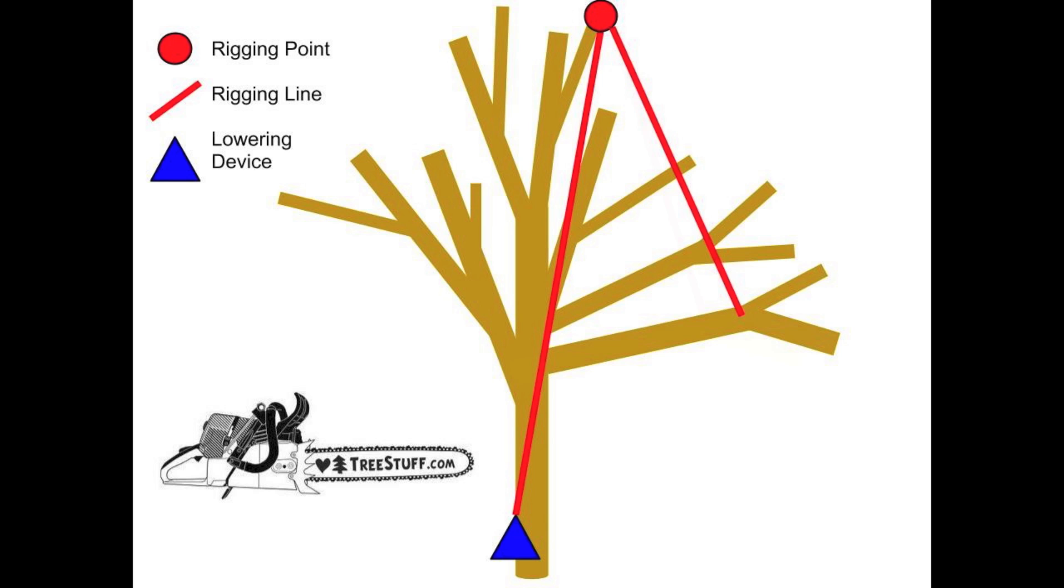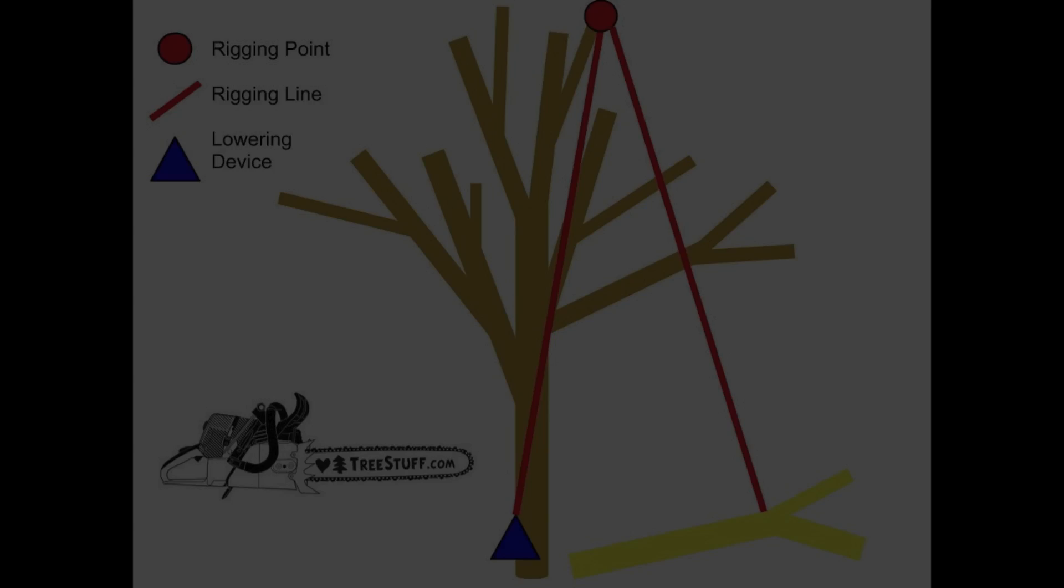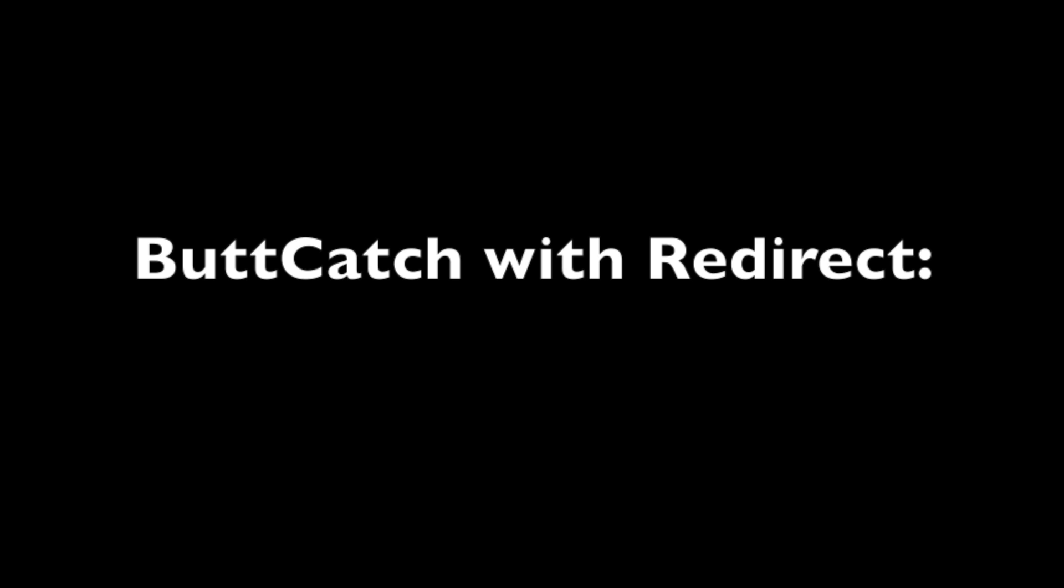Attempting the same cut without redirects causes the load to move towards the center of gravity and suddenly shift towards the worker and the rigging, causing injury or creating tangles. Using redirects distributes the force of the rigging and creates options in terms of angles and drop zone.